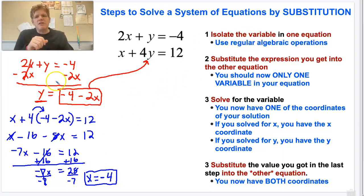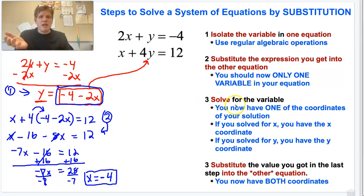Step 1, I isolated the variable. This was step 1 right there. Step 2, I substituted the expression that I got right there into the other equation right there. So this is step 2 right through here. Now I need to do step 3. Well, I did step 3. I solved for the variable and I got it right there.